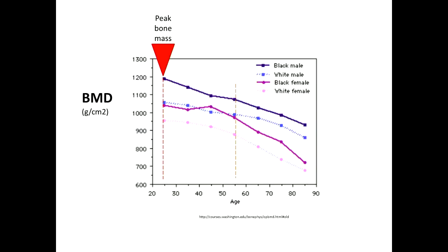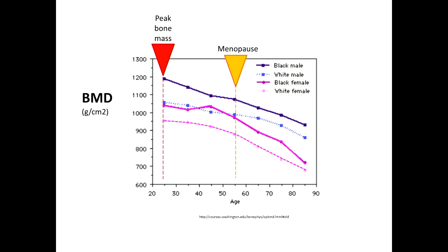Once peak bone mineral density is achieved in the late 20s, bone mineral density declines with age. In women, the rate of decline accelerates at menopause. Bone mineral density also declines in men; however, men have an overall higher baseline bone mineral density compared to women, and the decline is much more slow and steady.